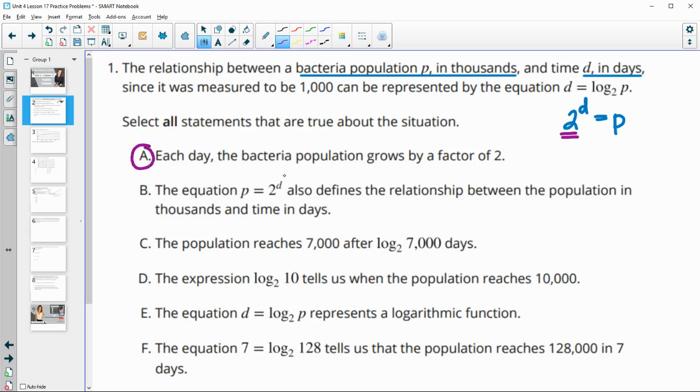The equation P equals 2 to the D also defines the relationship between the population in thousands and time in days. Yes, I just rewrote that in exponential form. Exponential and logarithmic forms are equivalent to each other.